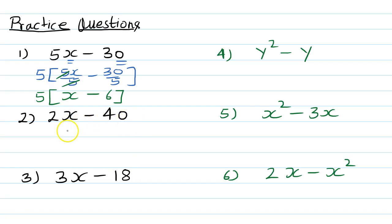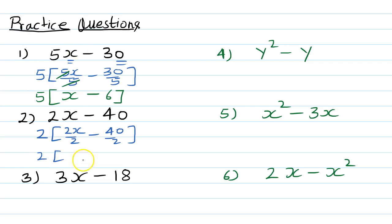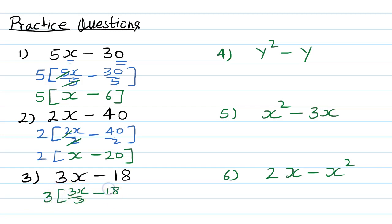For the next question, x is only in one term, so take 2 out: 2x divided by 2 gives x, and 40 divided by 2 gives 20, so the answer is 2(x minus 20). Similarly, take 3 out: 3x divided by 3 gives x, and 18 divided by 3 gives 6, so the answer is 3(x plus 6).